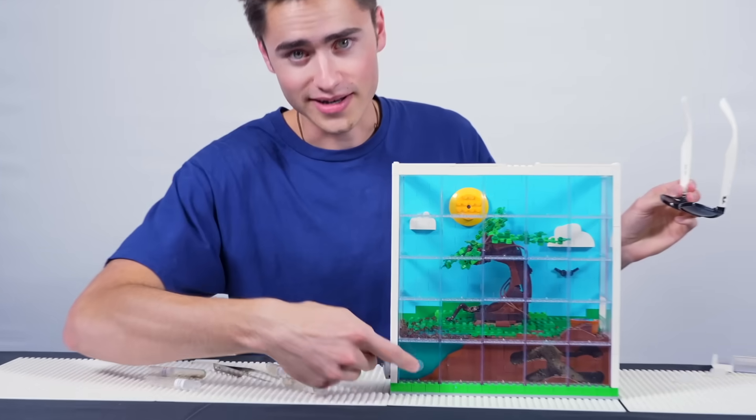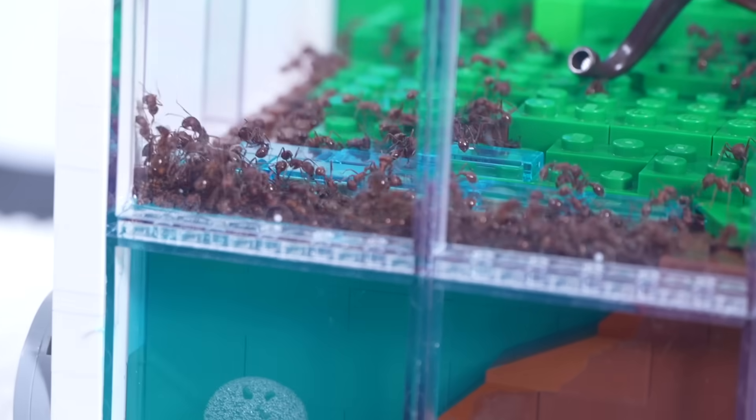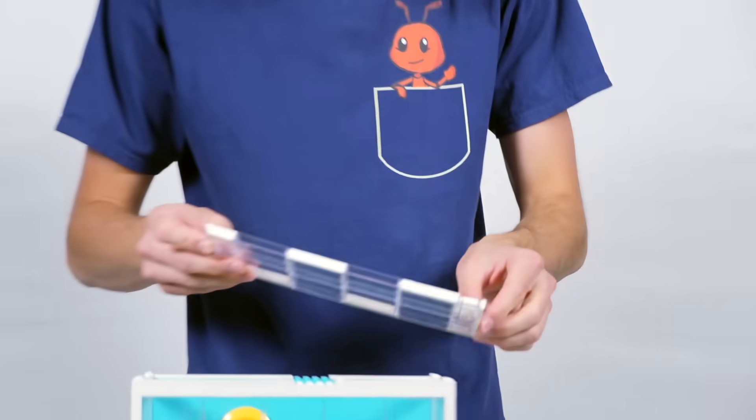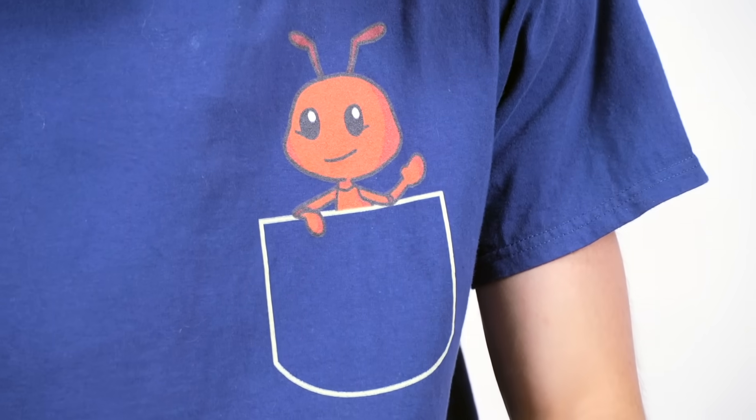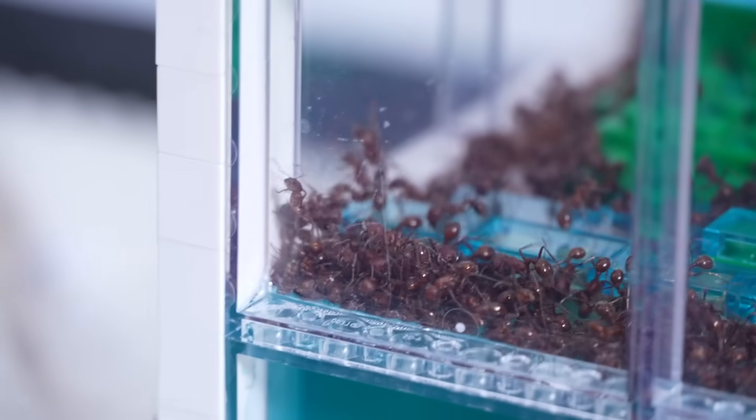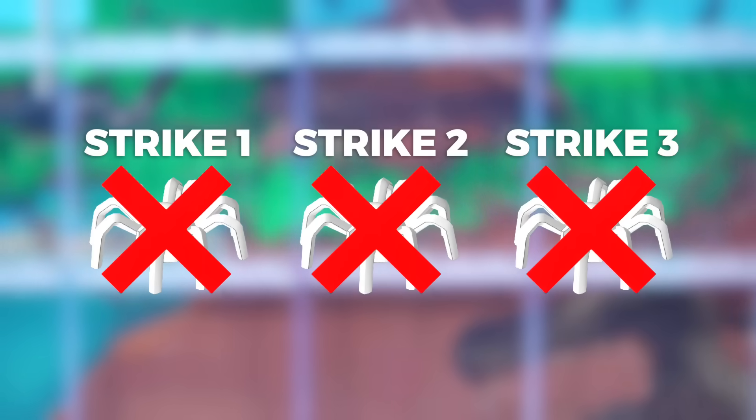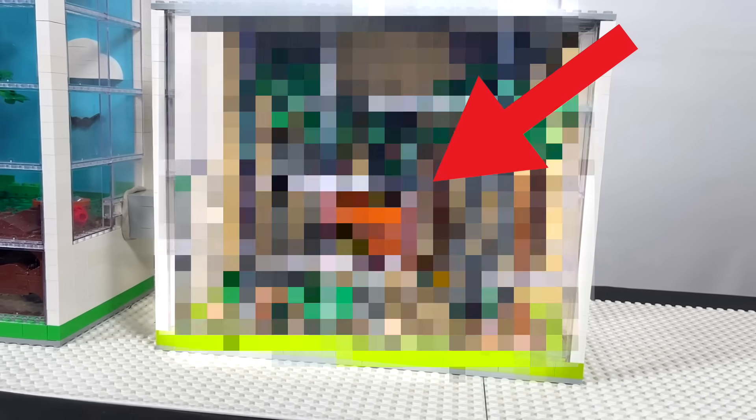The exit for level one is right in this little pond. As soon as they tunnel down far enough, it'll lead them into the next level. Now we just put the lid on and we pray to God that none of them escape. And to make this challenge more realistic, I'm going to give the ants three strikes. So if they fail at least three levels, they won't get the reward at the end.